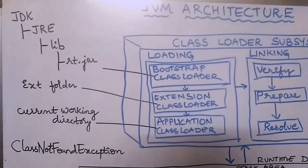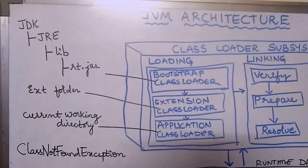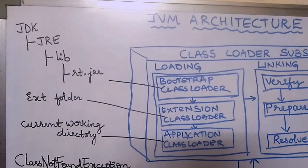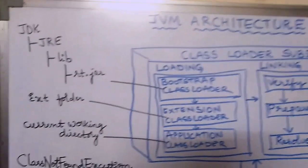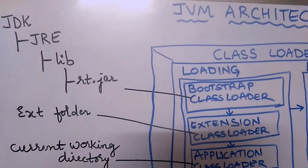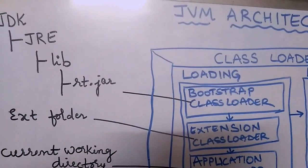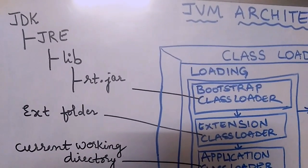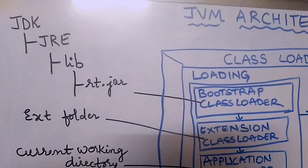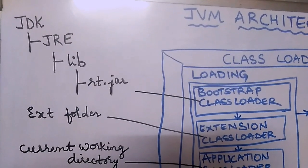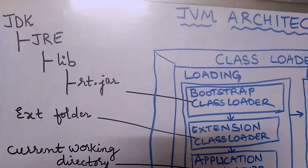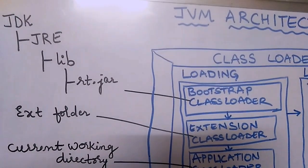The bootstrap class loader is responsible for loading all the files in the bootstrap class path. In JDK there is a folder called JRE, and inside JRE there is a folder called lib, and inside lib there is rt.jar. This rt.jar includes all core Java APIs — for example, the util package, awt package, and lang package. Bootstrap class loader is not implemented in Java; it is implemented in native languages like C and C++.